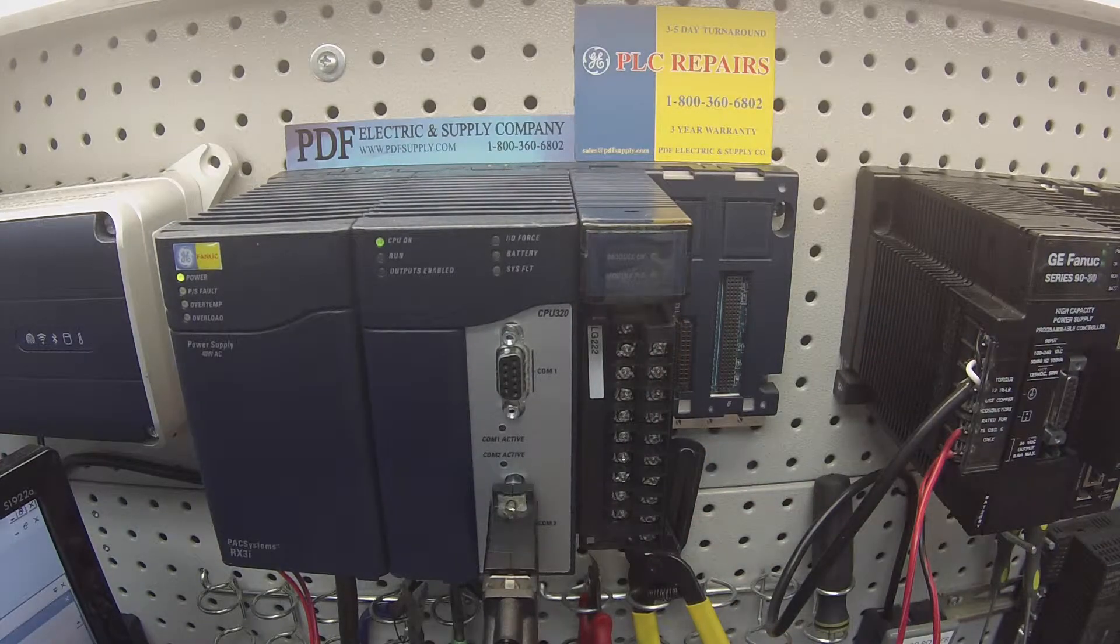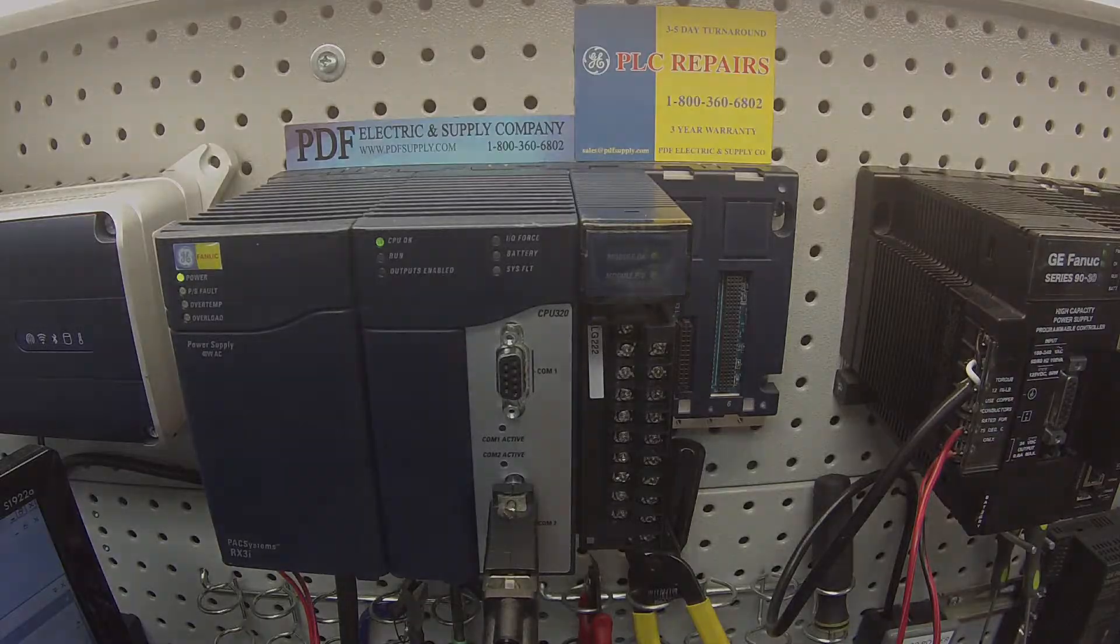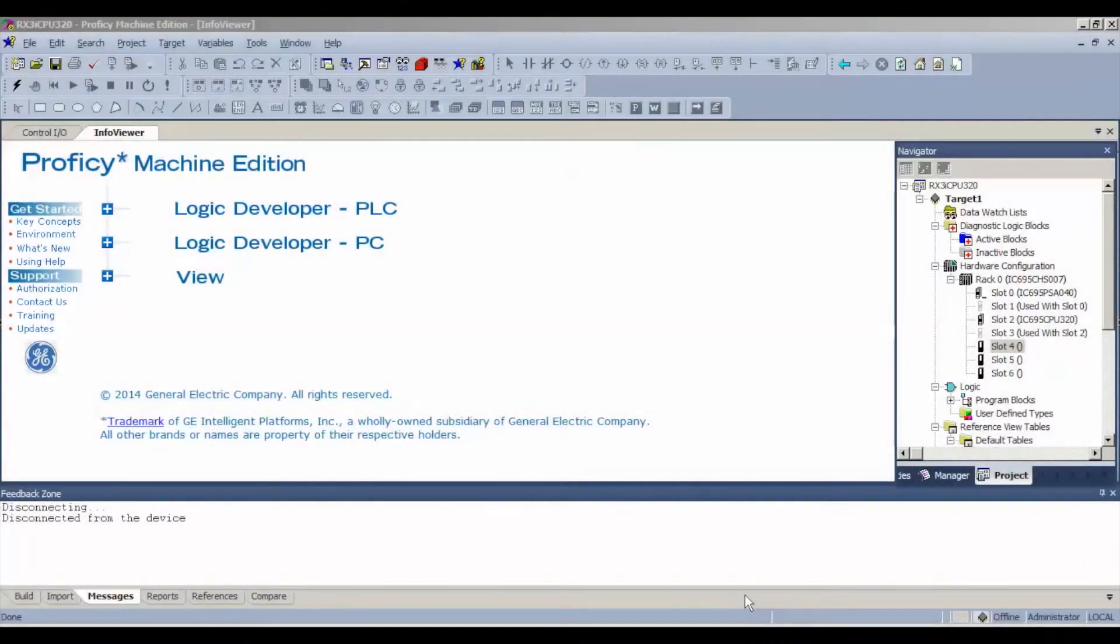Now that I have everything in there physically, we're going to go over to the software and do some configuration. I'm using Proficy Machine Edition. We're going to go to the Navigator bar and Rack 0. As you can see, it's my CHS007 as I mentioned.